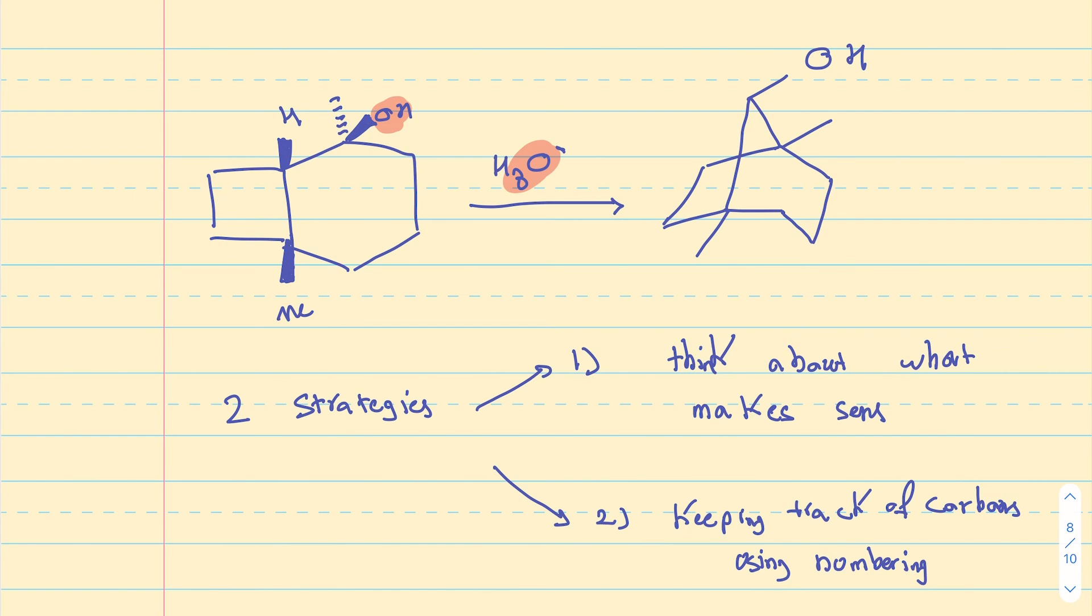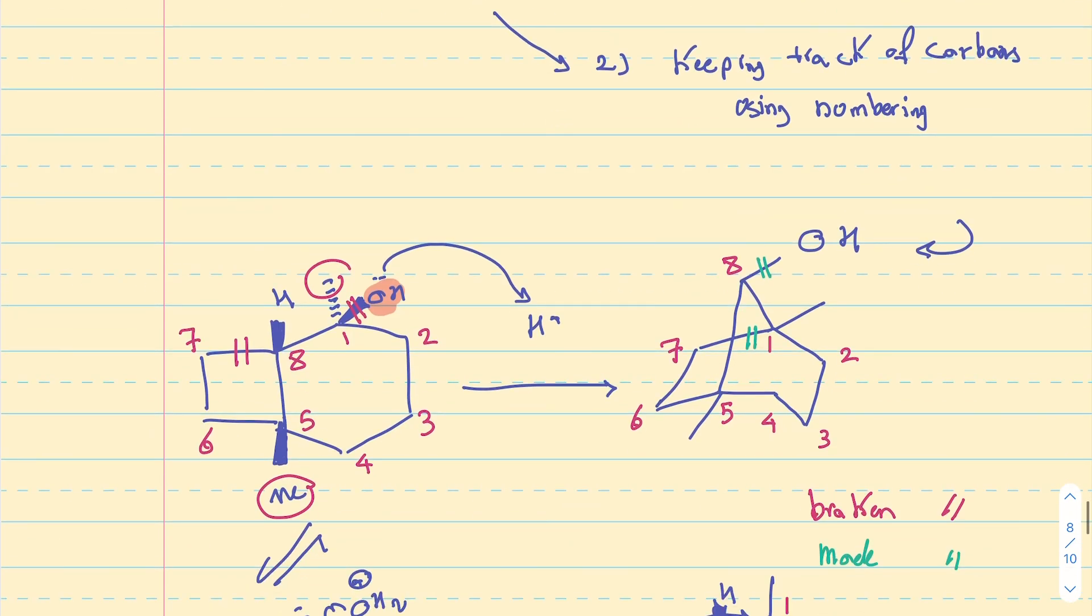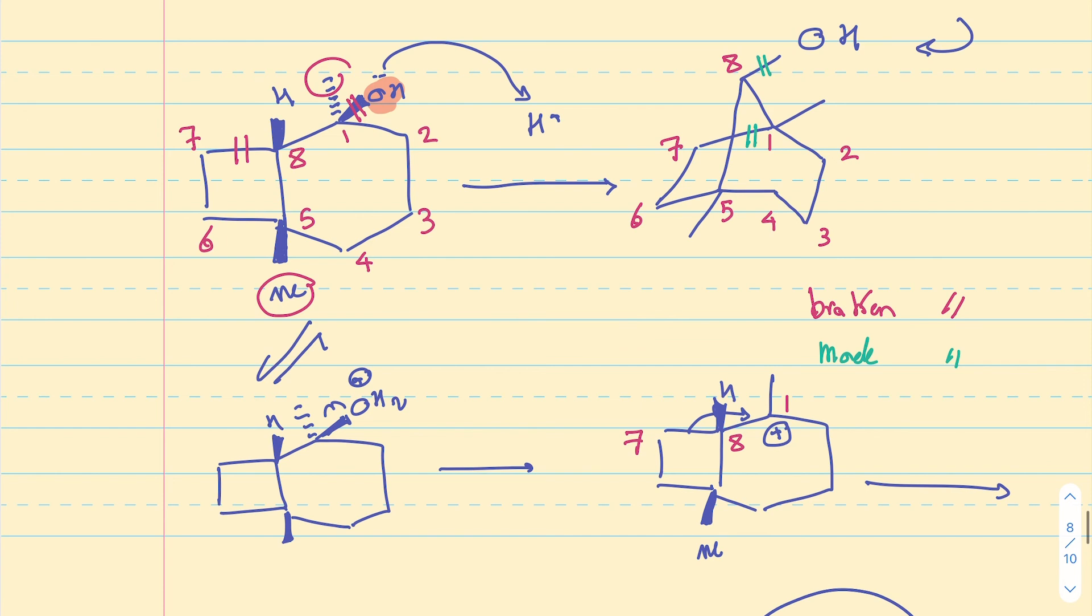Now, sometimes one strategy works better than the other, but the key is using both of them at the same time gives us the maximum amount of power we can have to tackle this problem. Now, as for what makes sense to happen, I have an alcohol. That alcohol can get protonated and leave as a carbocation. So, I'm thinking that is probably the first few steps of the reaction. So, that's how I got to this intermediate right here.